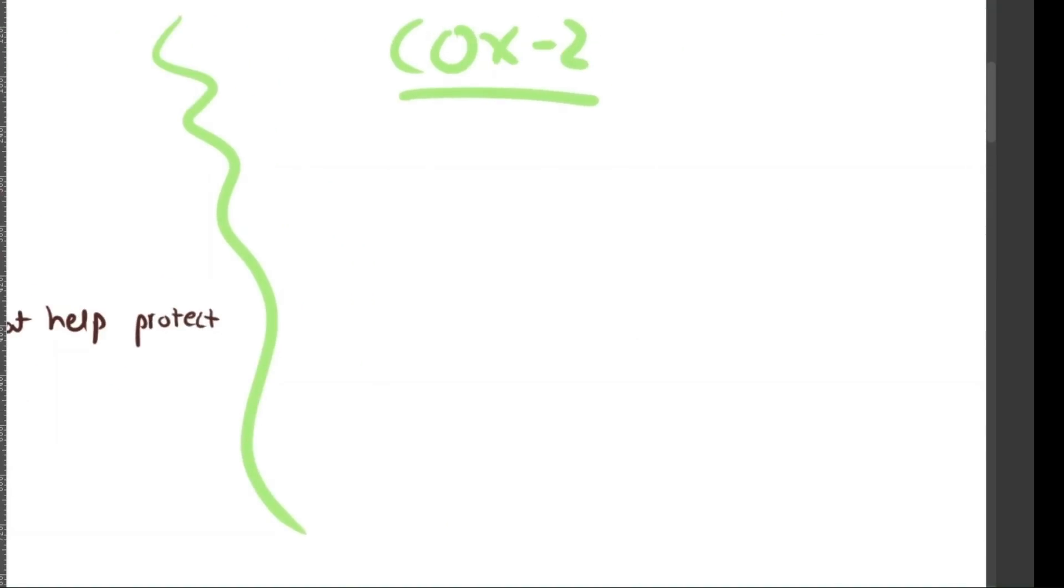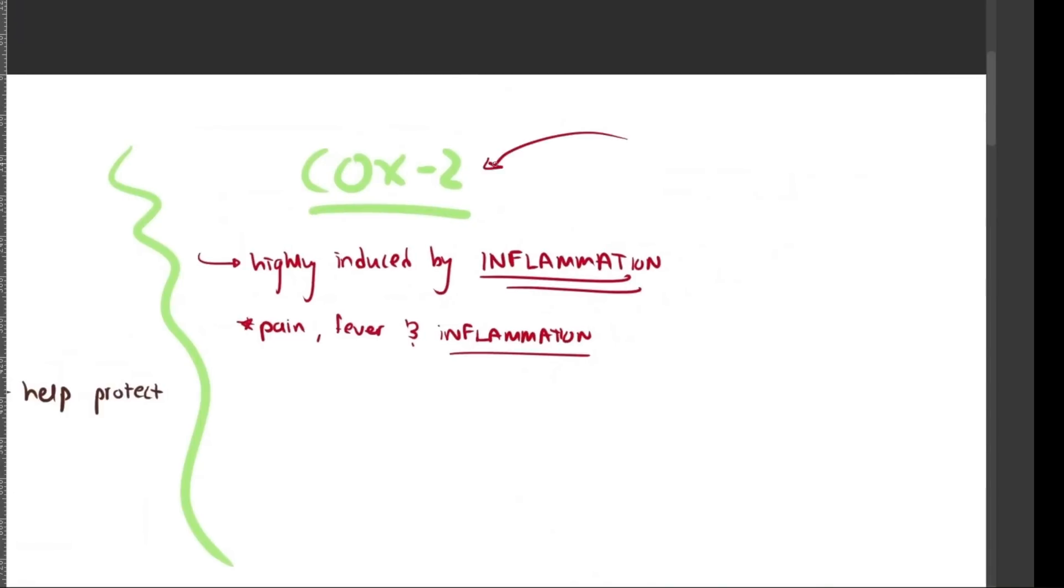Now, COX2, though, is the one that's basically highly induced during inflammation, meaning it's usually inactive unless triggered by injury, infection, or stress. This produces prostaglandins that drive pain, fever, and swelling. This is what we want to target without targeting COX1 as much, and this is very important in drug development.